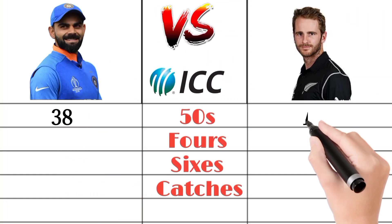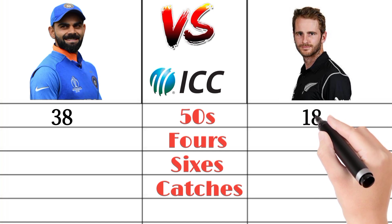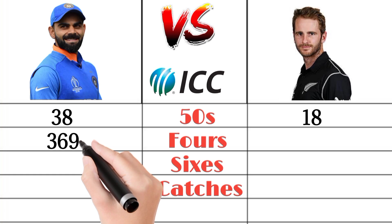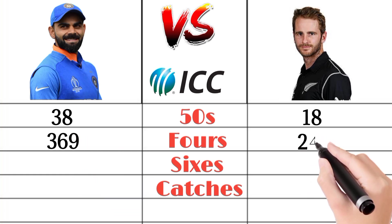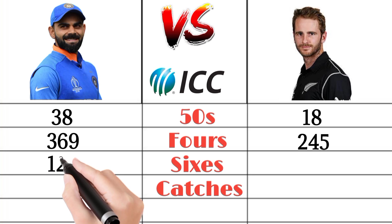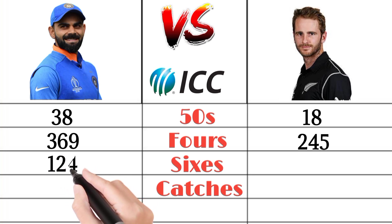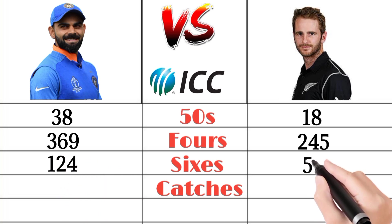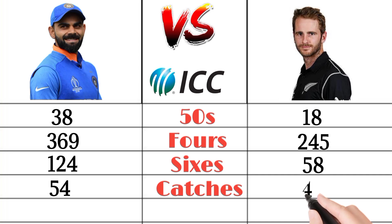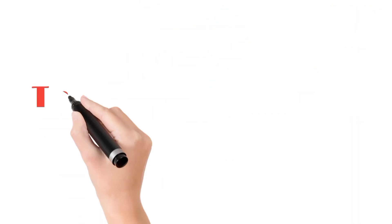Virat Kohli scored 38 fifties in T20 cricket and Kane Williamson scored 18 fifties. Virat Kohli scored 369 fours in T20 cricket and Kane Williamson scored 244 fours. Virat Kohli hit 124 sixes in T20 cricket and Kane Williamson hit 54 sixes. Virat Kohli also has 54 sixes noted in T20 cricket and Kane Williamson has 45. Thanks for watching.